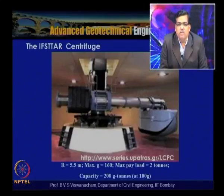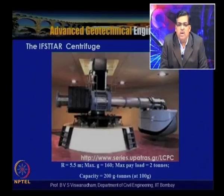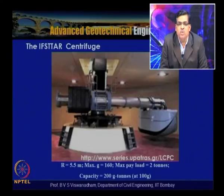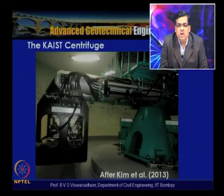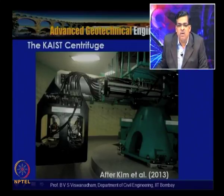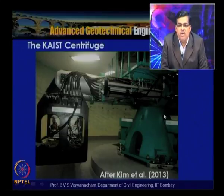The LCPC centrifuge (also known as the F-star centrifuge) in Paris, France has a radius of 5.5 meters, maximum g-level of 160, maximum payload of 2 tons, and capacity of 200 g·tons at 100g. Another beam centrifuge of equivalent radius (~5.5 m) is also shown, equipped with cables for actuating an earthquake actuator and data acquisition components; details are given in Kim et al. 2013.